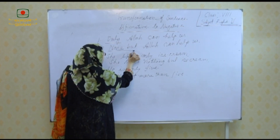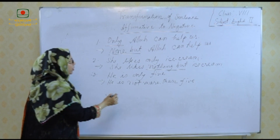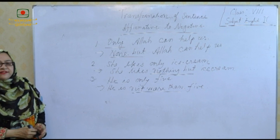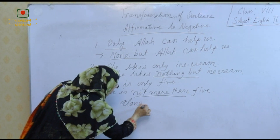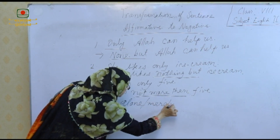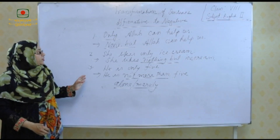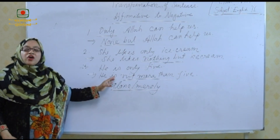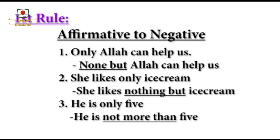Look at this: 'none but' for a person, 'nothing but' for a thing, or 'not more than' for a number. This is the rule — if 'only', 'alone', or 'merely' is used, then you will turn it into negative by using 'none but', 'nothing but', 'not more than', or 'not less than'. This is the first rule of affirmative to negative.